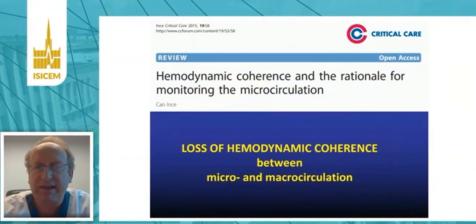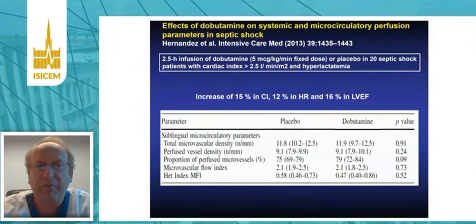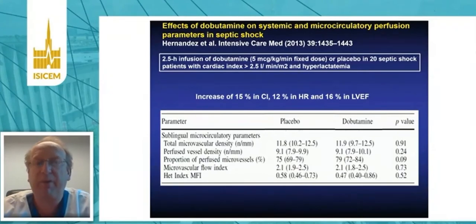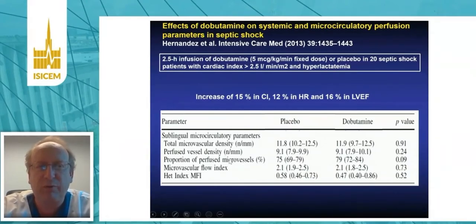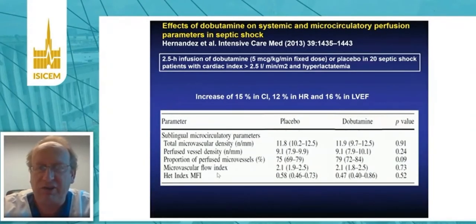To illustrate this concept, consider a study by Hernandez including 20 septic shock patients. The authors gave dobutamine at a fixed dose of 5 micrograms per kilo per minute. The infusion resulted in a 15% increase in cardiac index, but this increase did not result in improvement of tissue perfusion. Perfused vessel density, proportion of perfused microvessels, and microvascular flow index all remained unchanged despite the increase in cardiac index.